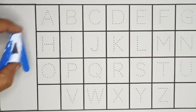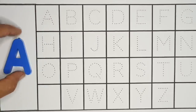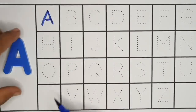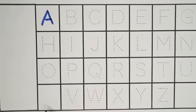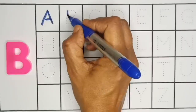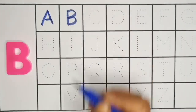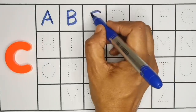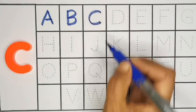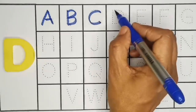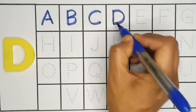A. A for apple. B. B for ball. C. C for cat. D. D for dog.